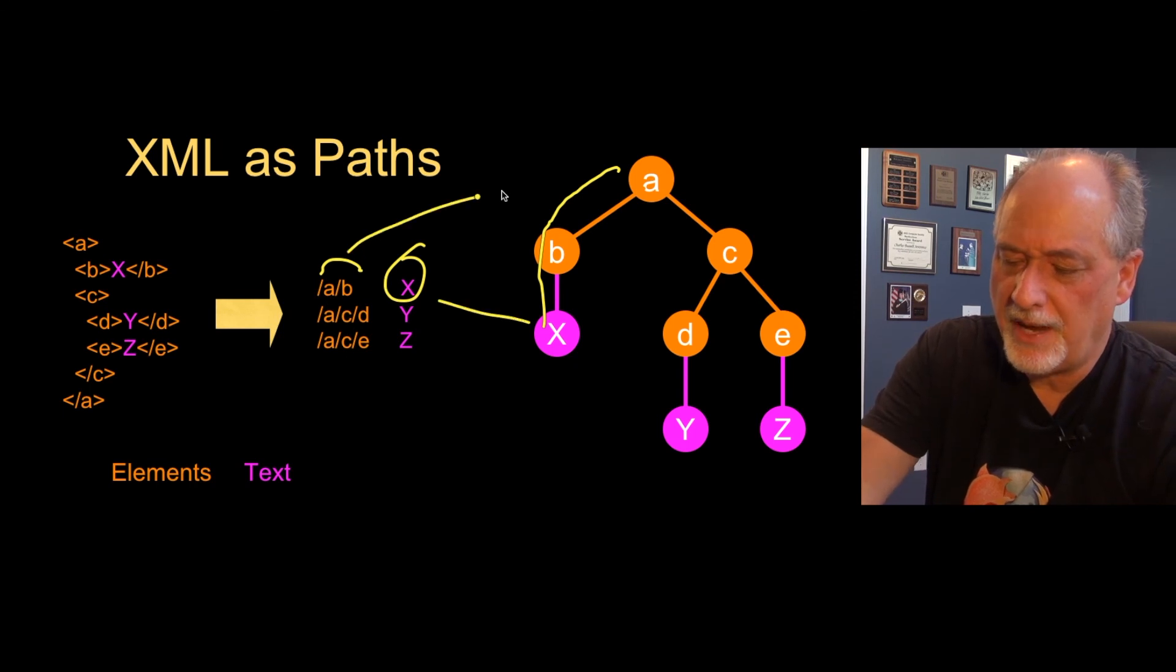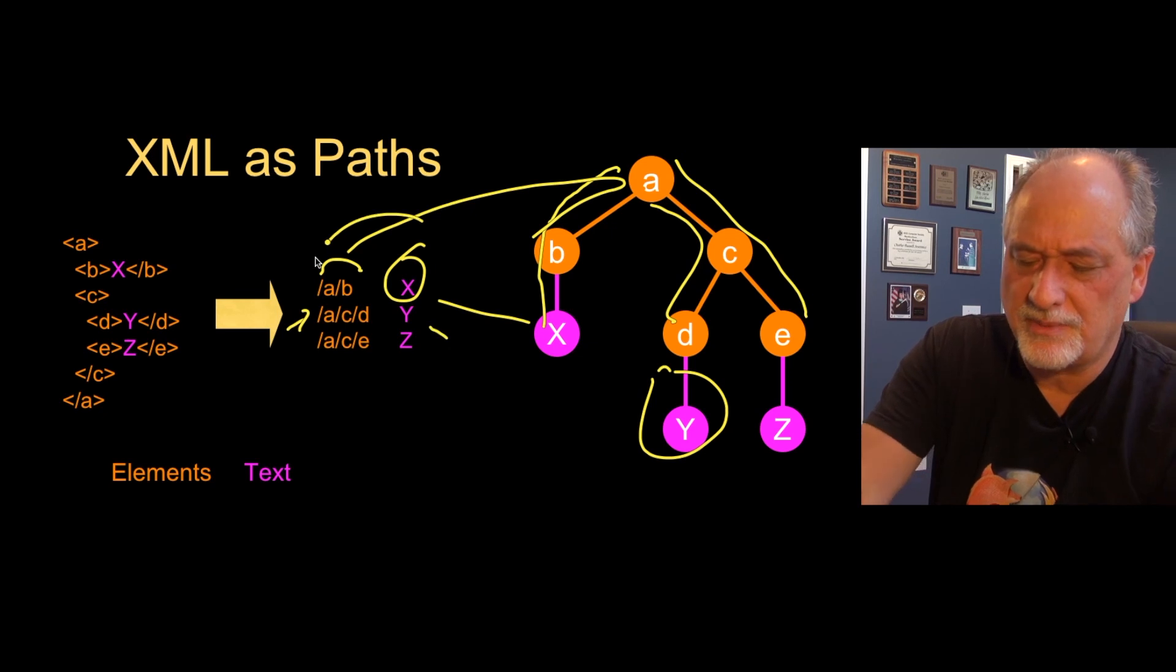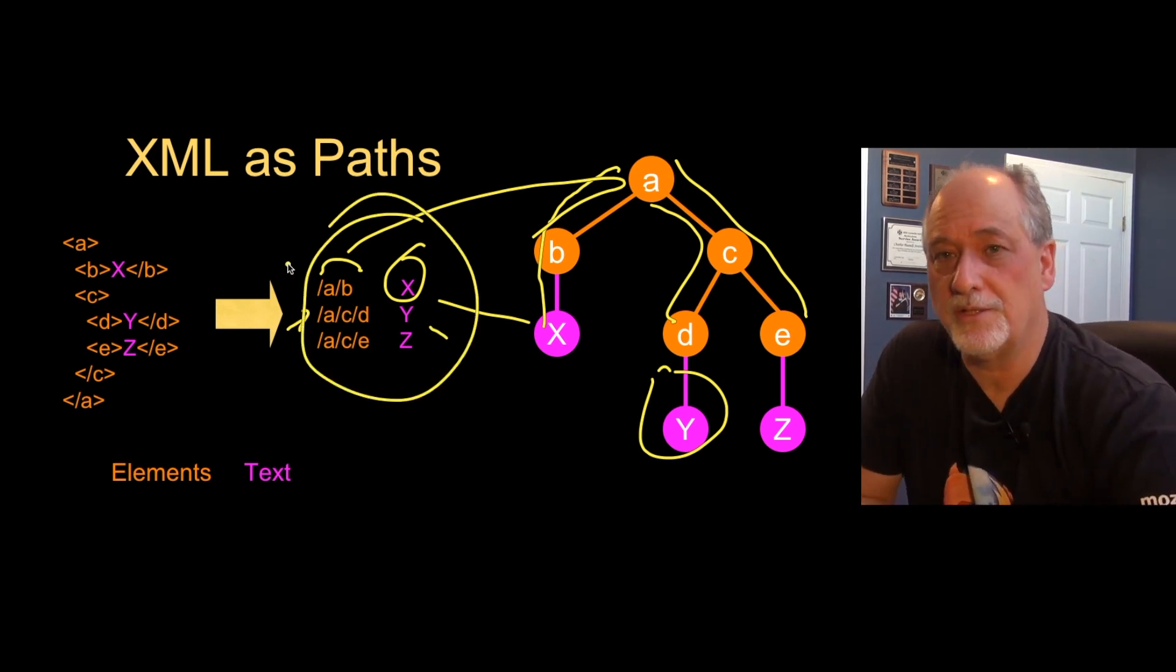So ACD, that's this one, is the path to Y, and ACE is the path to Z. You can think of these as paths. Part of what we're doing is we're coming up with ways to walk through and parse trees of XML data.